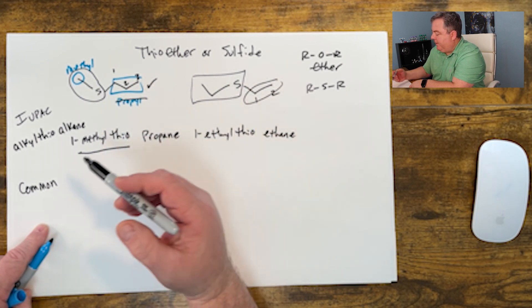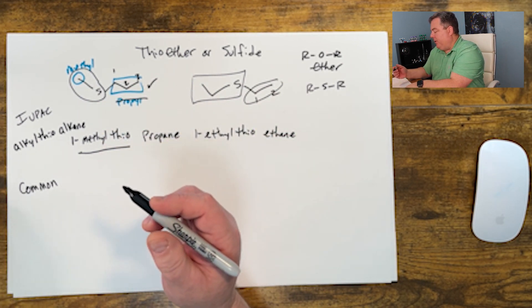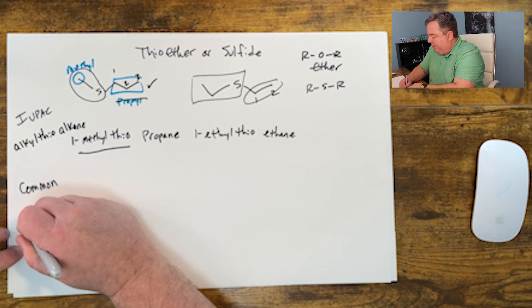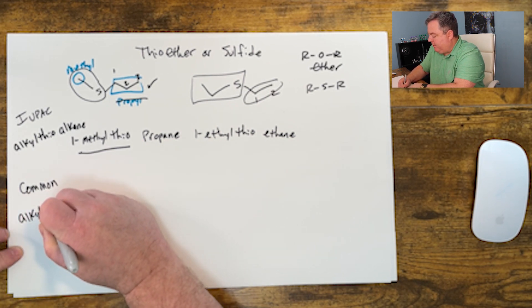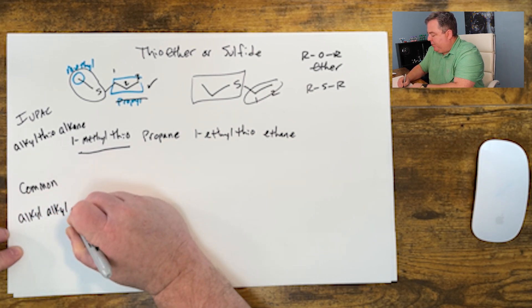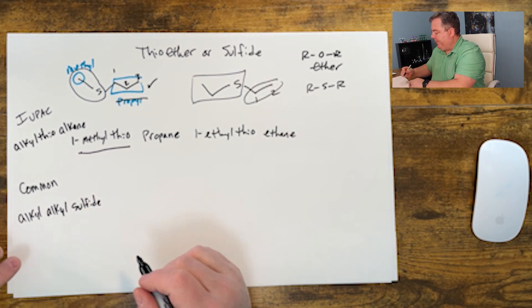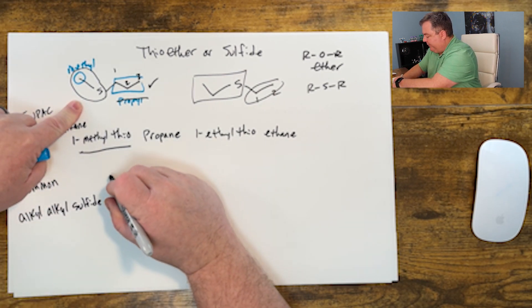The common way of doing it might be a little easier: you name the two alkyl groups and you put the word sulfide on the very end, and these are in alphabetical order. So let's redraw this one.